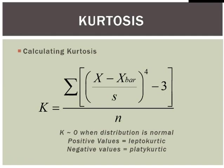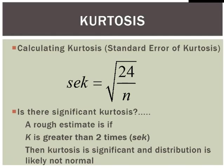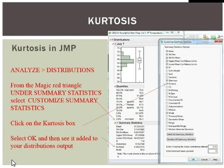Similar to skew, we have a way to measure whether or not this is a significant amount of kurtosis. We calculate a standard error of kurtosis, which is the square root of 24 divided by the number of observations. Just like skew, we multiply that by 2, and if the kurtosis we've calculated — either positive or negative — is greater than two times the standard error of kurtosis, then we know we have significant kurtosis and we likely do not have a normal distribution.